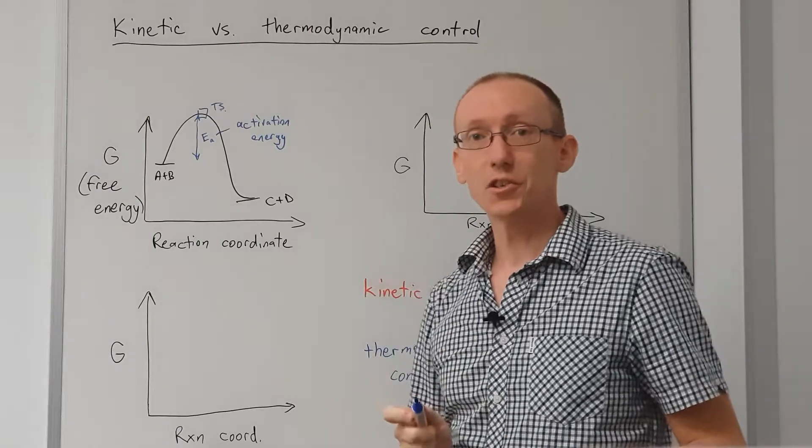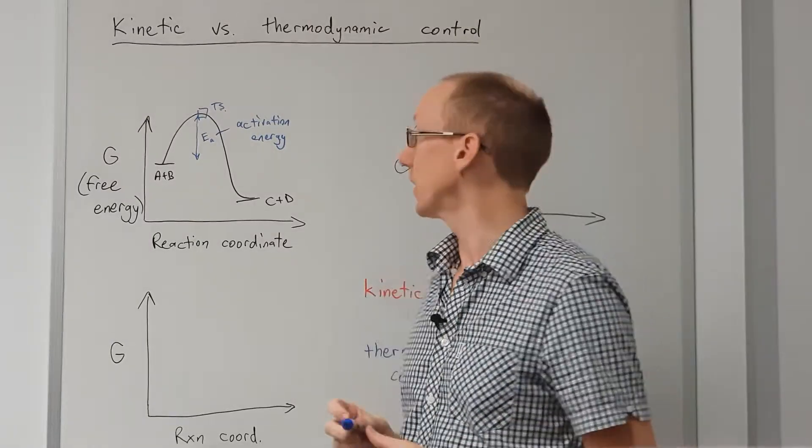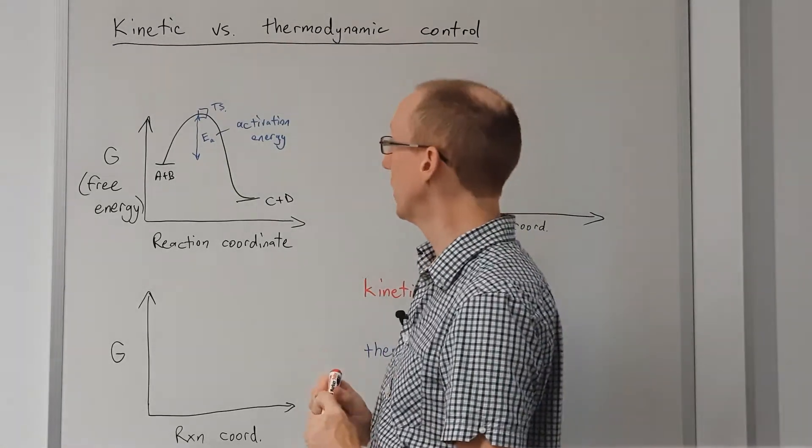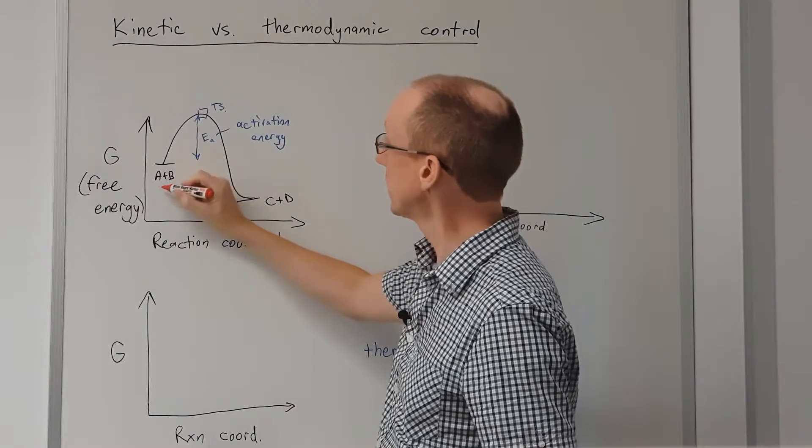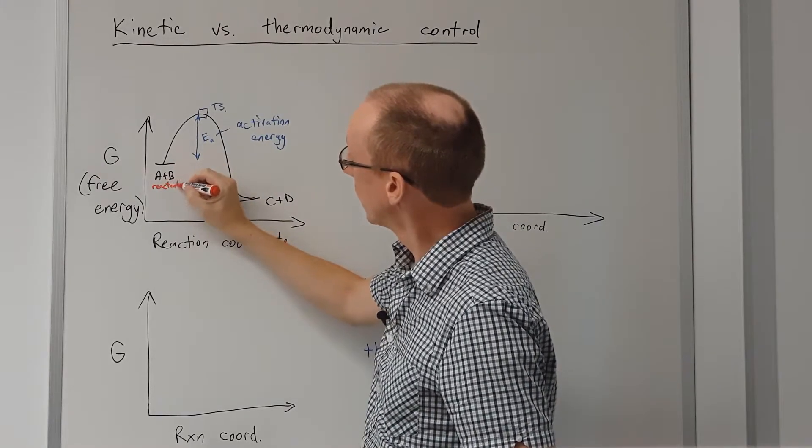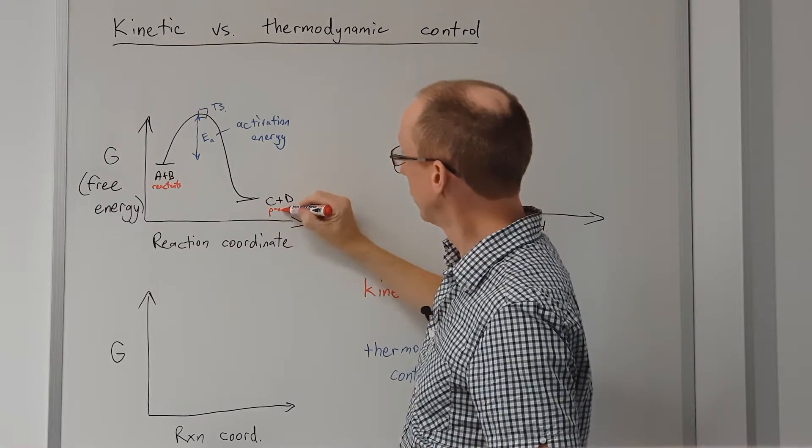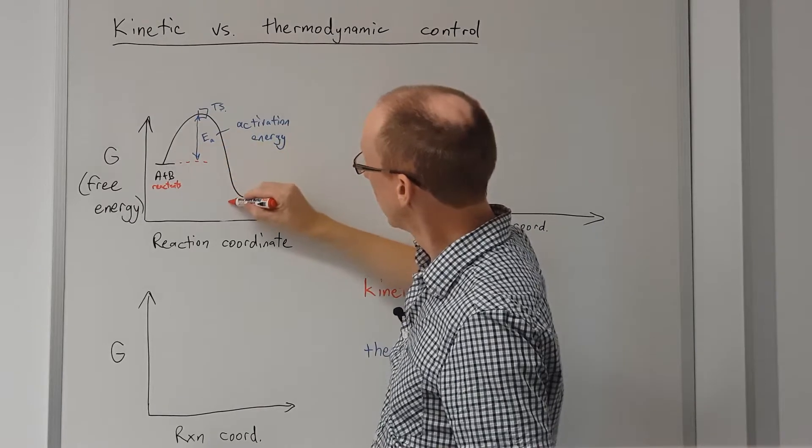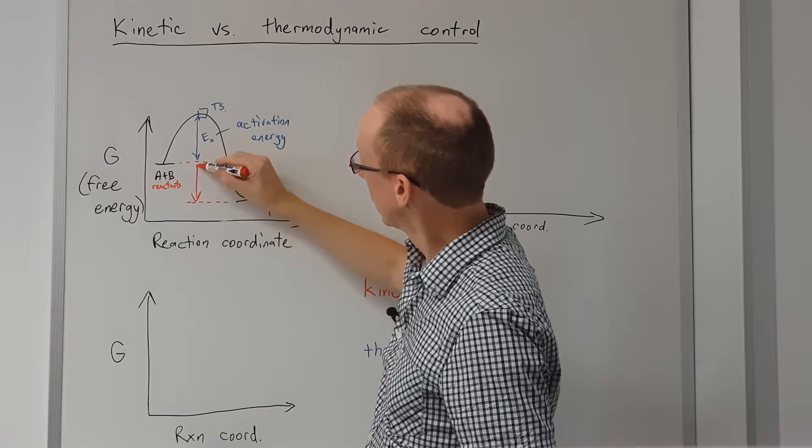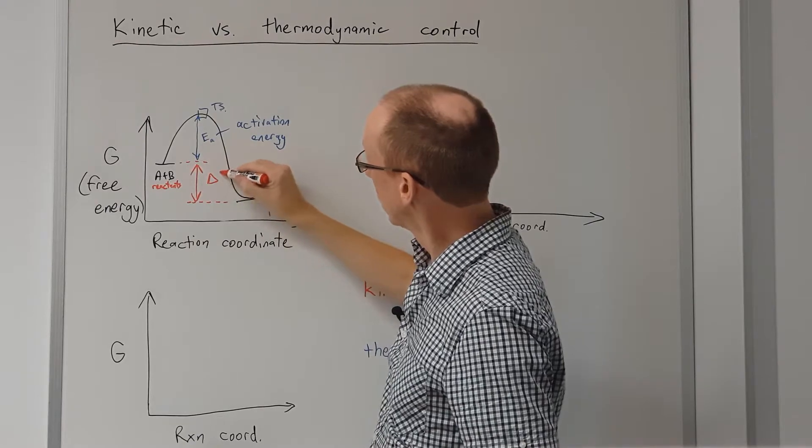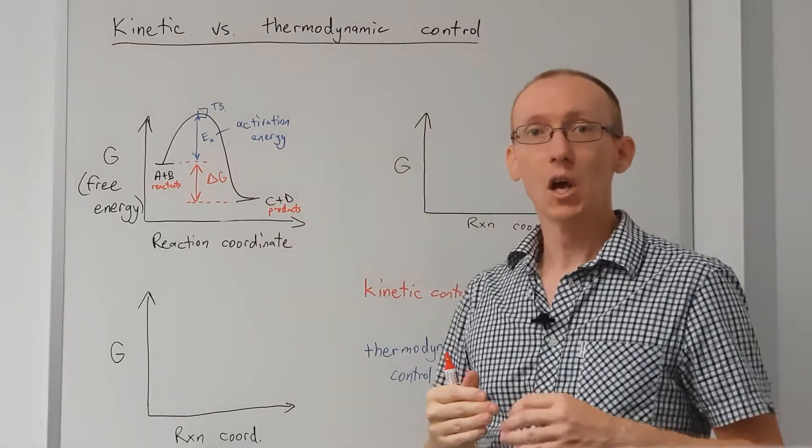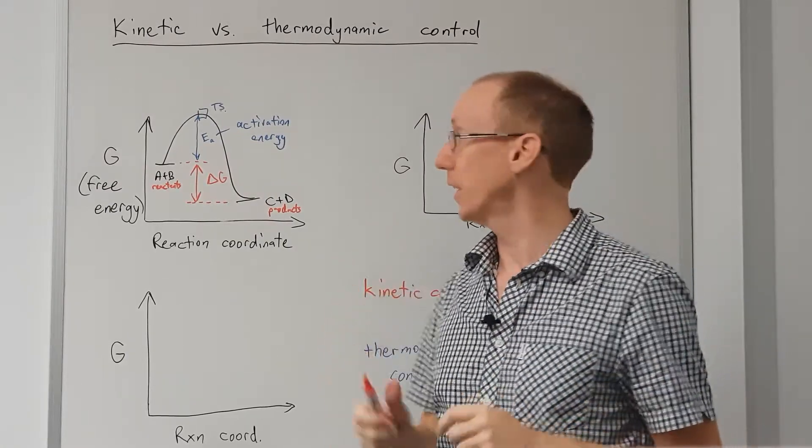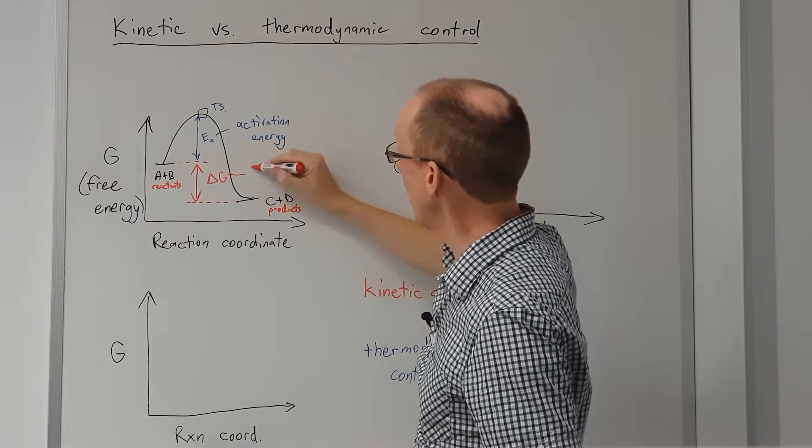Okay, and the activation energy tells us something about the rate of the reaction or the kinetics. Now the other important parameter is the change in the free energy between the reactants and the products. So the change in free energy tells us which of the two is more stable, the products or the reactants. So the delta G is the thermodynamic parameter.